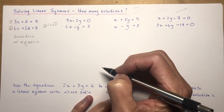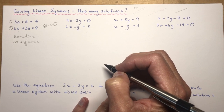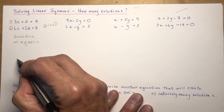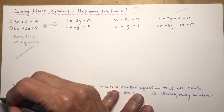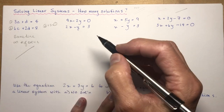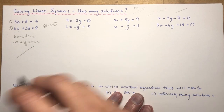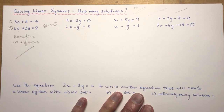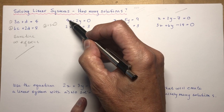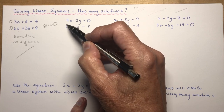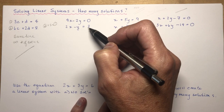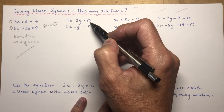Sometimes we say infinitely many solutions or an infinite number of solutions - they're exactly the same line. Now for the next example: checking if one equation is a multiple of the other. Here, 2 is 2 times 1, and 4 is 2 times 2, but 2 times 3 is not 0, so it's not simply a common multiple.